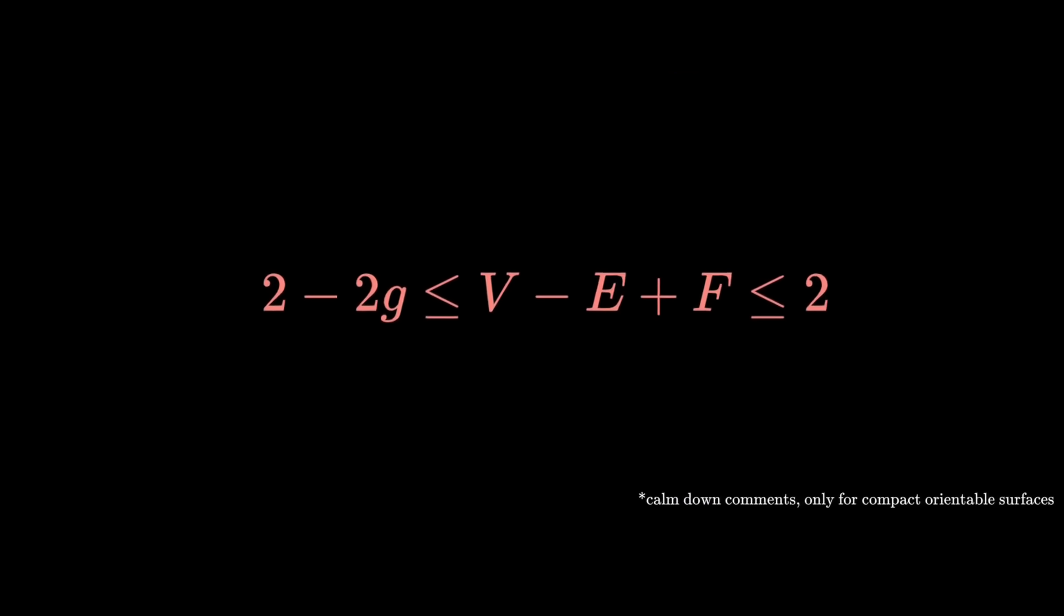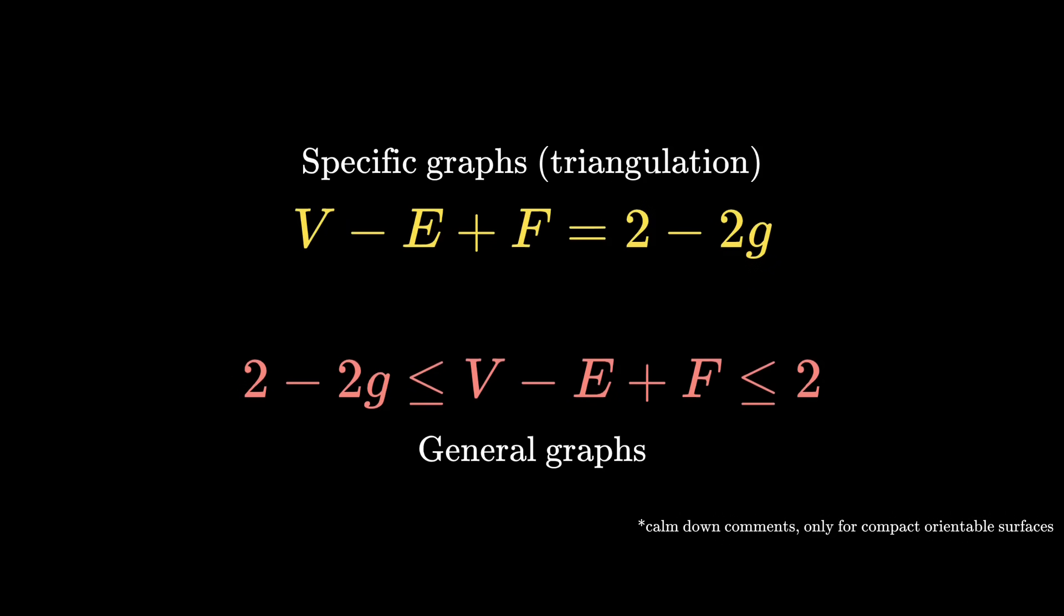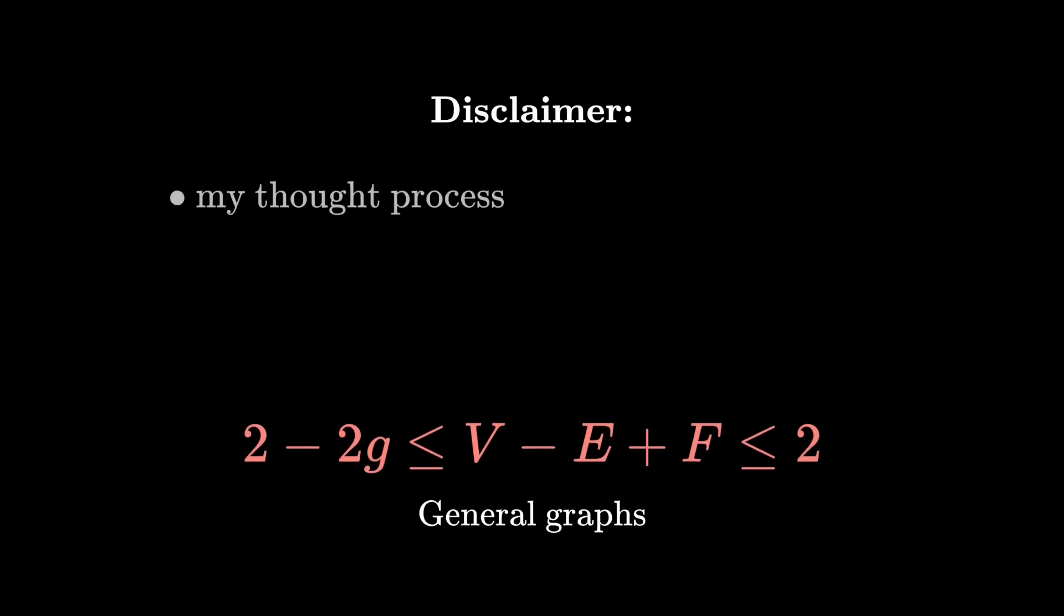This theorem might be different from what you have seen, because while this is true for all graphs without self-intersections, most literature deals with a specific kind of graph known as triangulation. For those kinds of graphs, V minus E plus F takes the smallest possible value, 2 minus 2G. In the rare occasion that the general case is mentioned, the proof is basically left as exercise. Because it's supposed to be just an exercise, I thought this was easy and attempted it. This video is about my thought process when approaching this. Rather than rigour, I will focus more on the intuition of where the result comes from. I'll let you be the judge of whether this should just be an exercise.